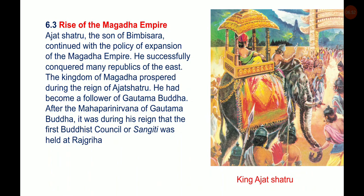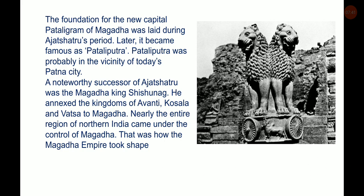Ajatashatru, the son of Bimbisara, continued with the policy of expansion of the Magadha empire. He successfully conquered many republics of the east, and the kingdom of Magadha prospered during his reign. He had become a follower of Gautama Buddha. After the Mahaparinirvana of Gautama Buddha, it was during his reign that the first Buddhist council was held at Rajagriha. The foundation for the new capital Pataligrama of Magadha was laid during Ajatashatru's period, and it later became famous as Pataliputra, probably in the vicinity of today's Patna city.